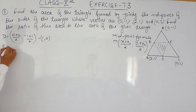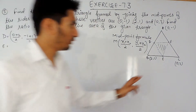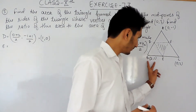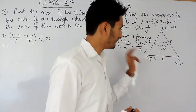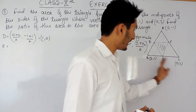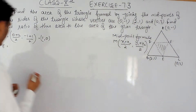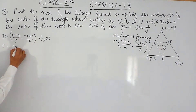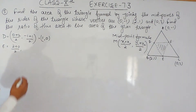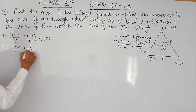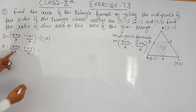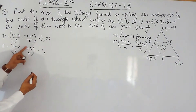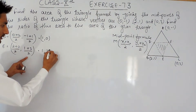Now let's find the coordinate for E. E is the midpoint of BC. Using the same formula, the x-coordinate is (2 + 0) / 2 = 1. And the y-coordinate is (y1 + y2) / 2, which gives 4 divided by 2 = 2. So E = (1, 2).